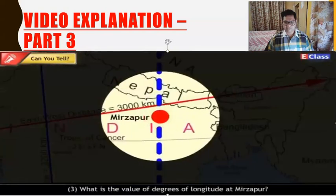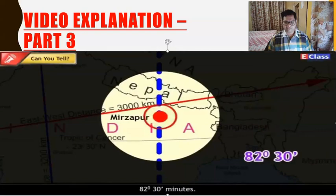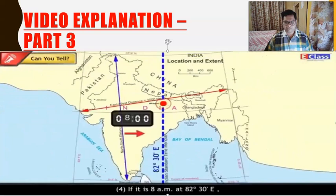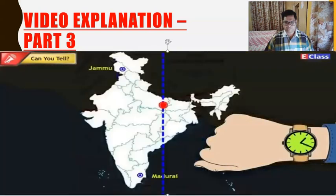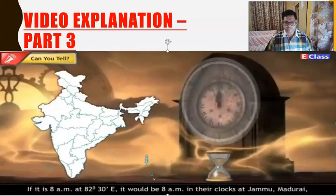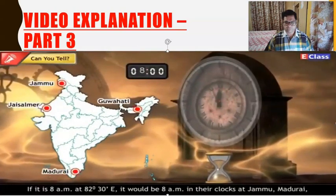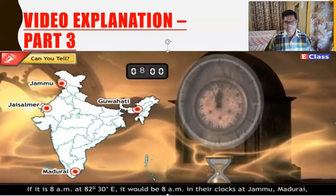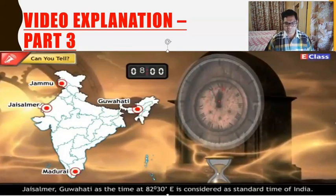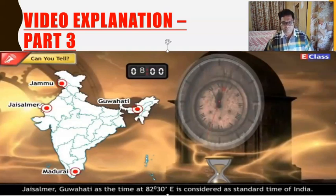Answer: 4 minutes. What is the value of degrees of longitude at Mirzapur? Answer: 82 degrees 30 minutes. If it is 8 a.m. at 82° 30' E, what would be the time in their clocks at Jammu, Madurai, Jaisalmer, and Guwahati? Answer: If it is 8 a.m. at 82° 30' E, it would be 8 a.m. at Jammu, Madurai, Jaisalmer, and Guwahati, as the time at 82° 30' E is considered the standard time of India.